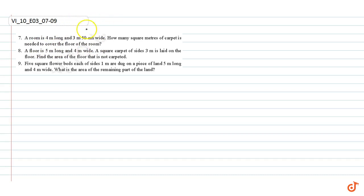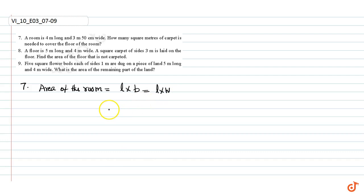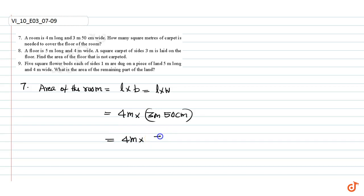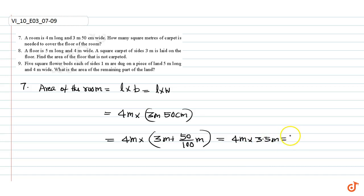We know that the area of the room is equal to length into breadth, which is equal to length into width. This is equal to 4 meters into 3 meters 50 centimeters, which is equal to 4 meters into 3 meters plus 50 divided by 100 meters, equal to 4 meters into 3.5 meters, equal to 14 square meters.